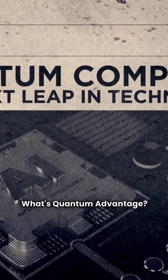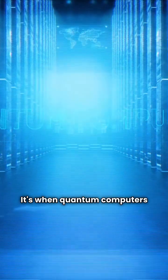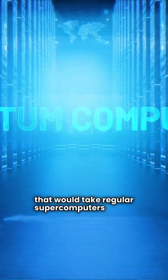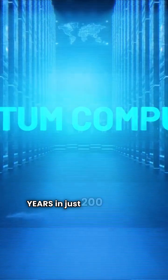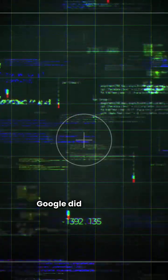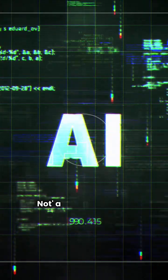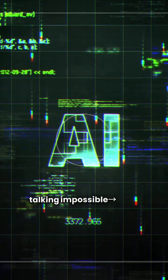What's quantum advantage? It's when quantum computers solve problems that would take regular supercomputers 10,000 years in just 200 seconds. Google did this in 2019. Not a bit faster. We're talking impossible done before lunch.